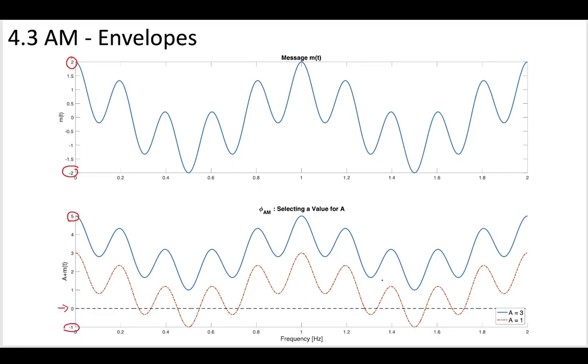Okay, so you could add a big number so that you bring the message plus A, you could make a big number so that you bring everything above zero. Or you could add a small number that doesn't quite bring it above zero, just shifts it up a little bit. And let's see what the difference is.